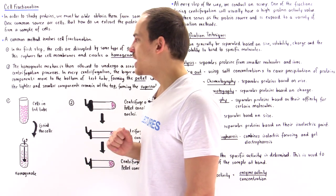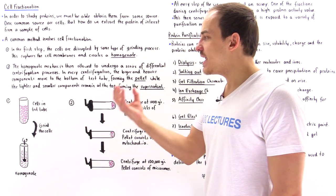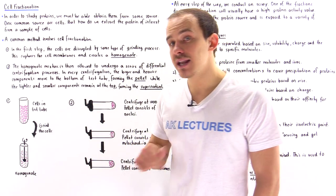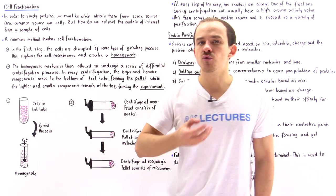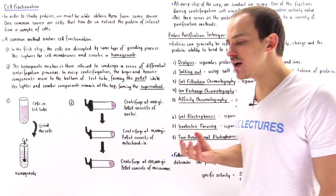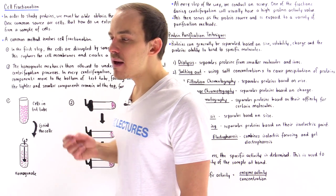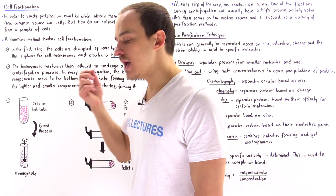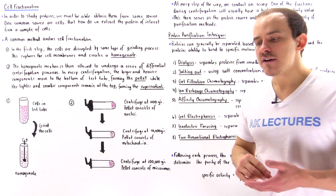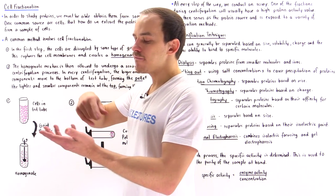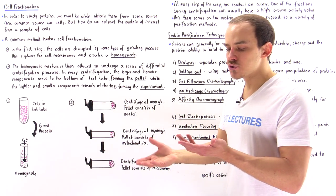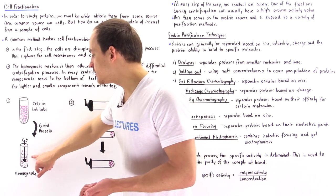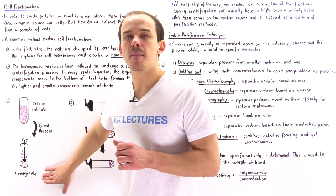We form a homogenate in the following manner. We take a test tube and place the cells inside as shown in the diagram. We then expose the cells to some type of grinding or mixing process, which breaks down and ruptures the cell membranes, exposing and mixing all the different components found inside the cells — for example, the nuclei, organelles such as mitochondria, ribosomes, and so forth. All these different things mixed inside our test tube is called a homogenate.